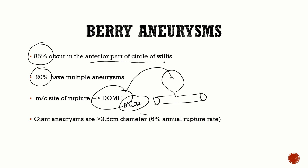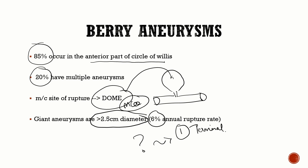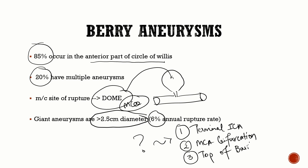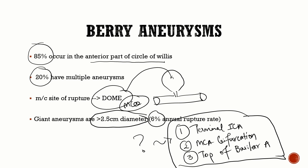A giant aneurysm is where the diameter is more than 2.5 centimeters. The risk of rupture in a giant aneurysm is very high — the annual rupture rate is around 6%. Giant aneurysms are commonly seen in three places: the terminal internal carotid artery, the middle cerebral artery bifurcation, and the top of the basilar artery.